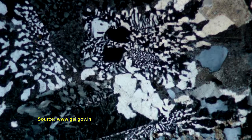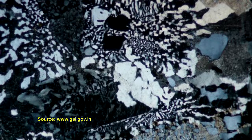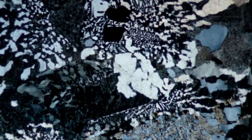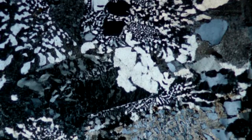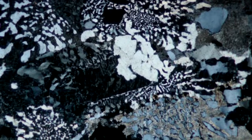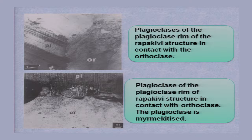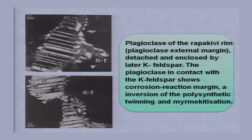What is myrmecatization? Plagioclase is basically a silicate mineral — calcium, aluminum silicate. Once the silicate ligand is detached from the calcium and aluminum, quartz is left in the system. This quartz is present in the form of vermicular quartz, and this vermicular quartz shows myrmecatic texture — the rock is a myrmecatized rock.